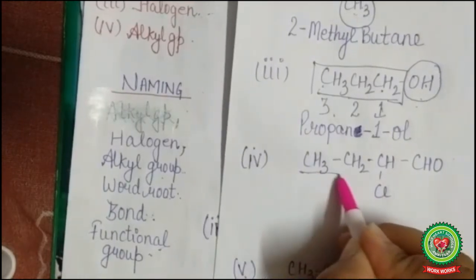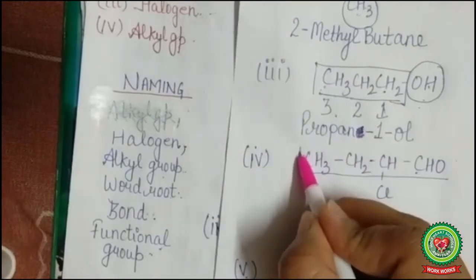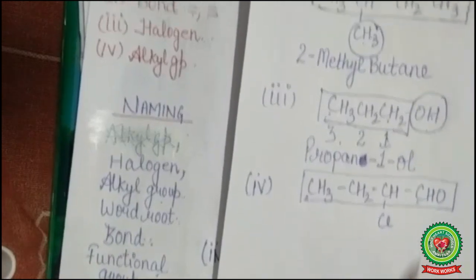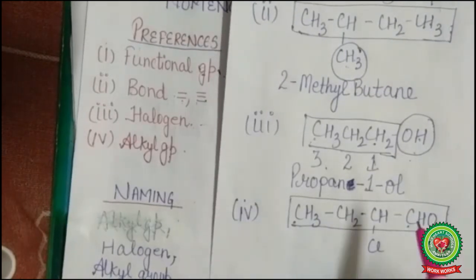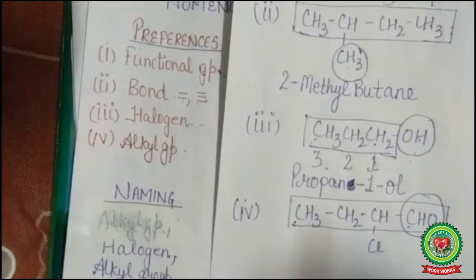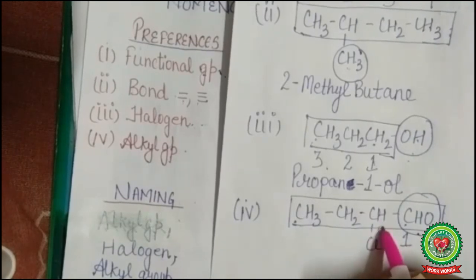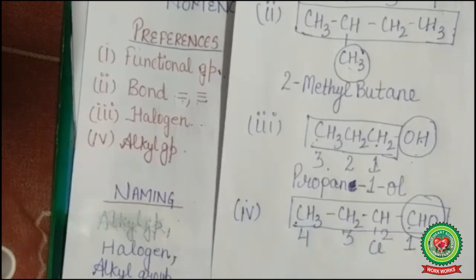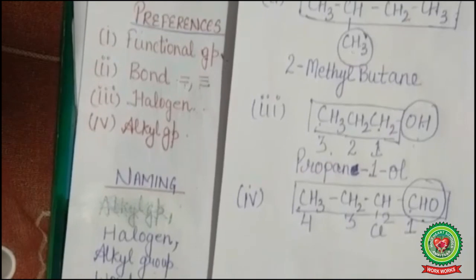For the next structure: chain selection — straight chain, first carbon to last carbon, no carbon attached to first or last, so this is my straight chain. Now we proceed with numbering. For preferences: functional group is present — CHO is the functional group, aldehyde, and 'al' is the suffix for it. So we start numbering from there: one, two, three, four.